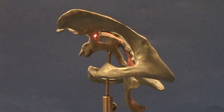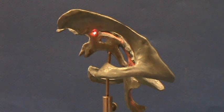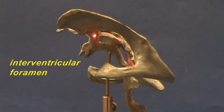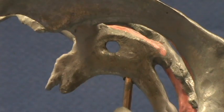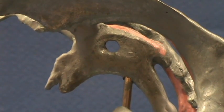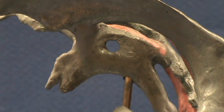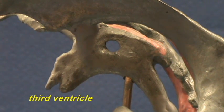The lateral ventricles are connected to the third ventricle by the interventricular foramina. Here we have a close-up view of the third ventricle.